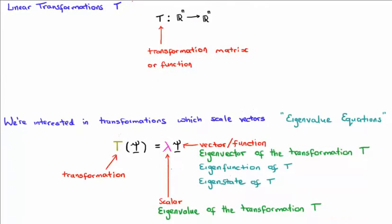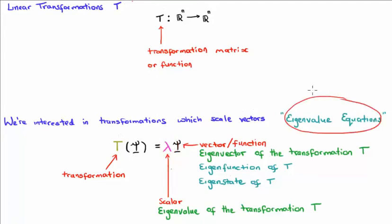I've written an eigenvalue equation towards the bottom centre of your screen. We have a linear transformation T acting on a vector which I'm going to call psi. It gives us back the same vector psi but with a multiplicative constant lambda. Now because we're speaking about eigenvalue equations, the norm is to add the prefix 'eigen' onto all of the components of your eigenvalue equation so that people know you're dealing with an eigenvalue equation. That's actually where a lot of the confusion comes from, because people apply the prefix and use different terms differently.